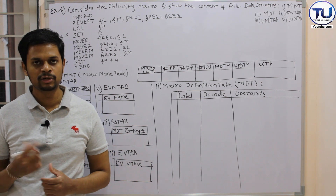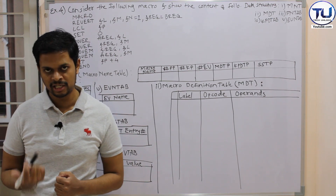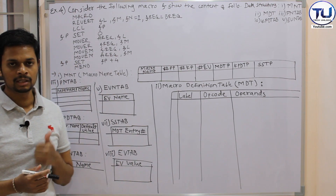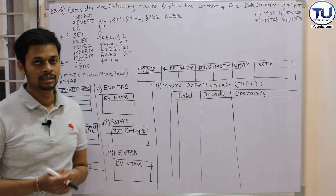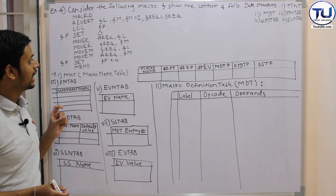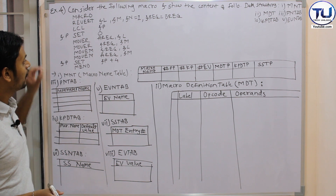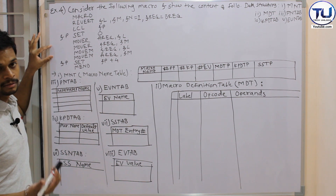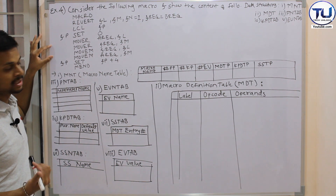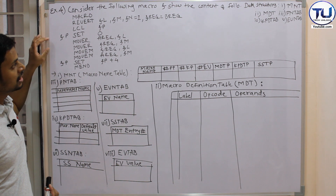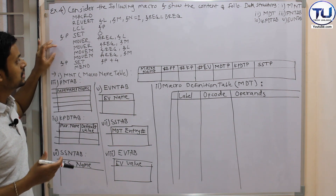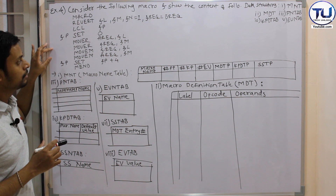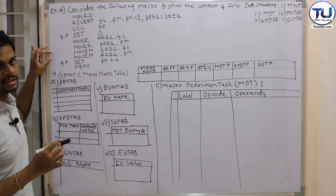Welcome to Tech Unlocked. Today we are going to see example number 4 for the macro. In this example there is a slight change, and that's why I have taken this example for practice purposes. Let me first read out the example, then I will explain how this example is different from the earlier examples we have already seen.